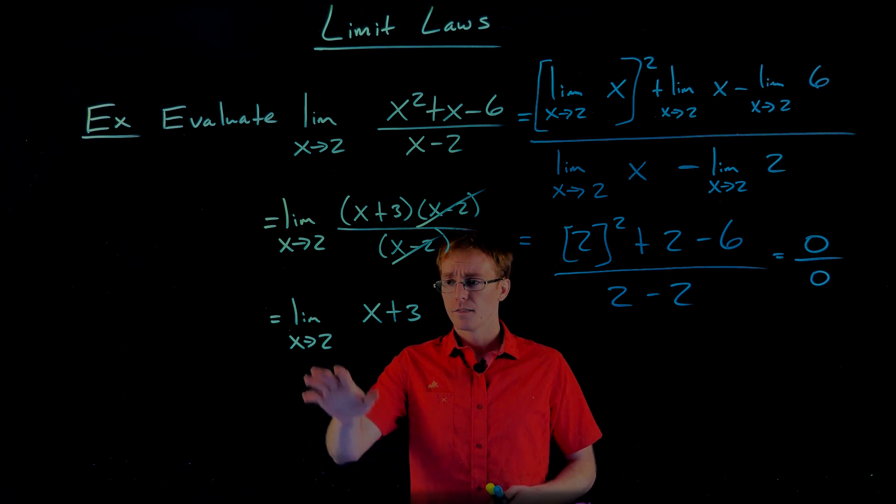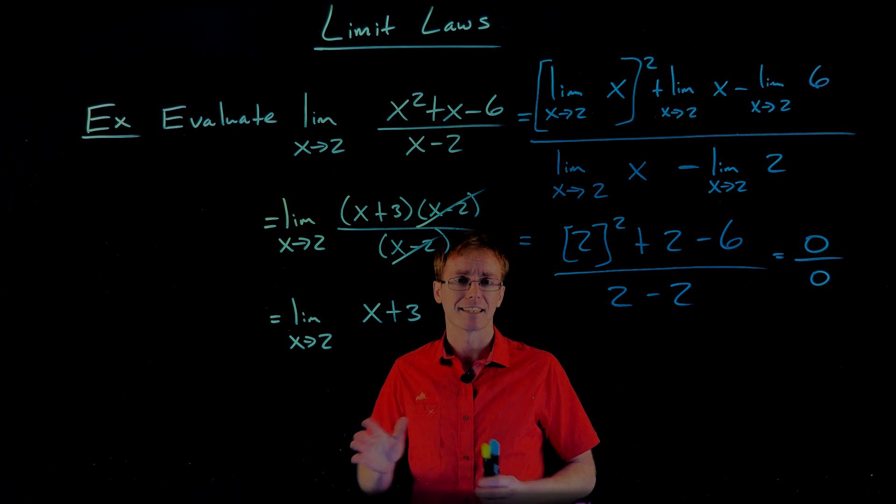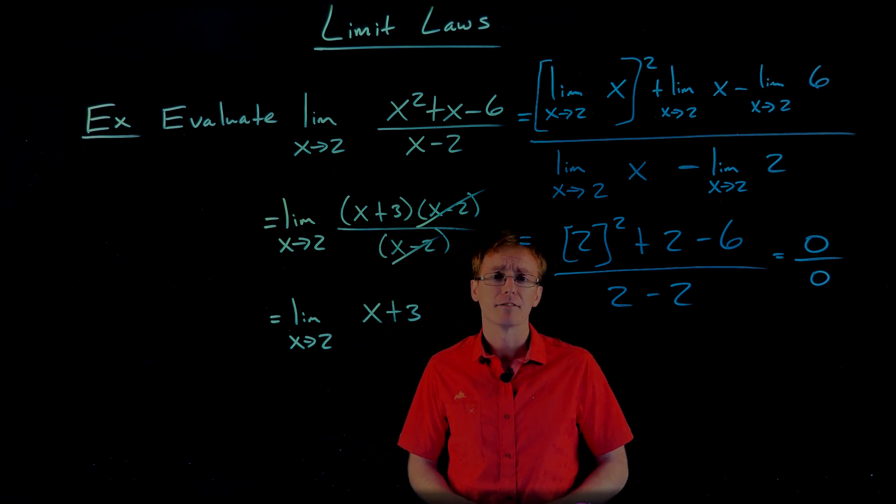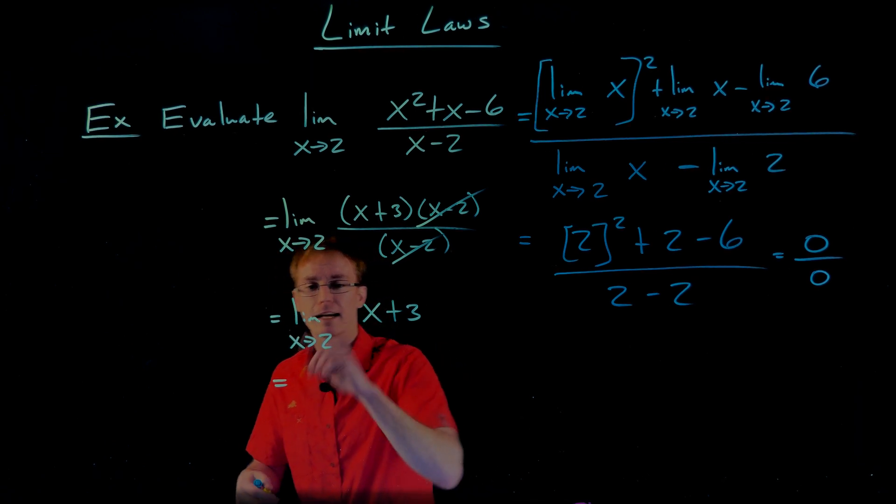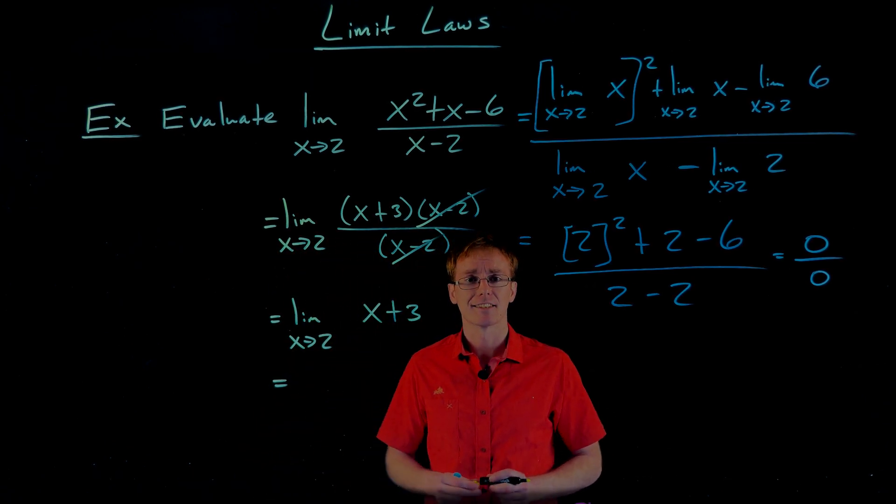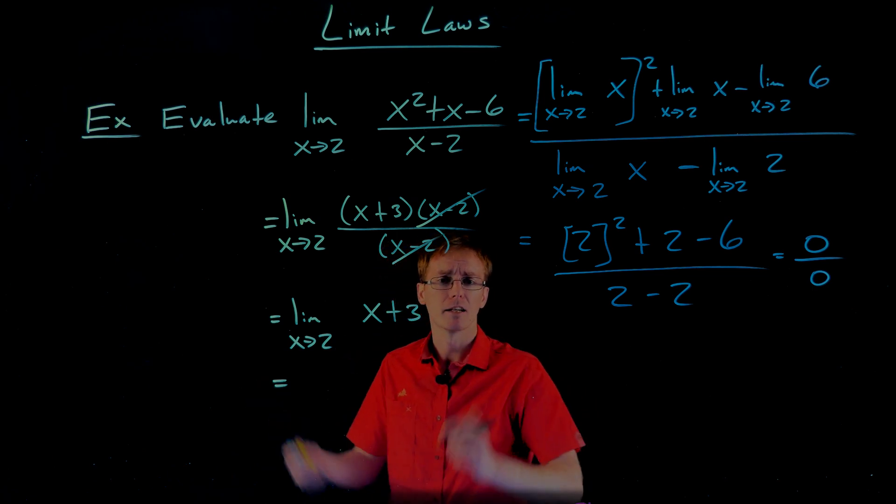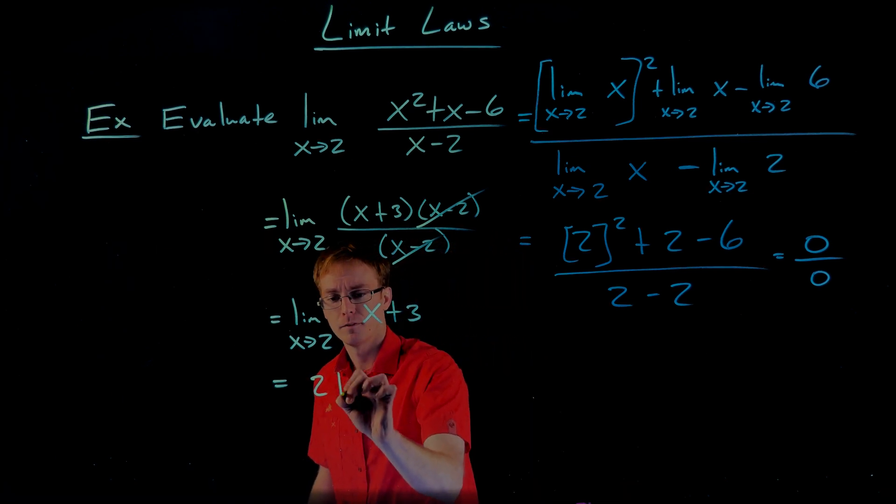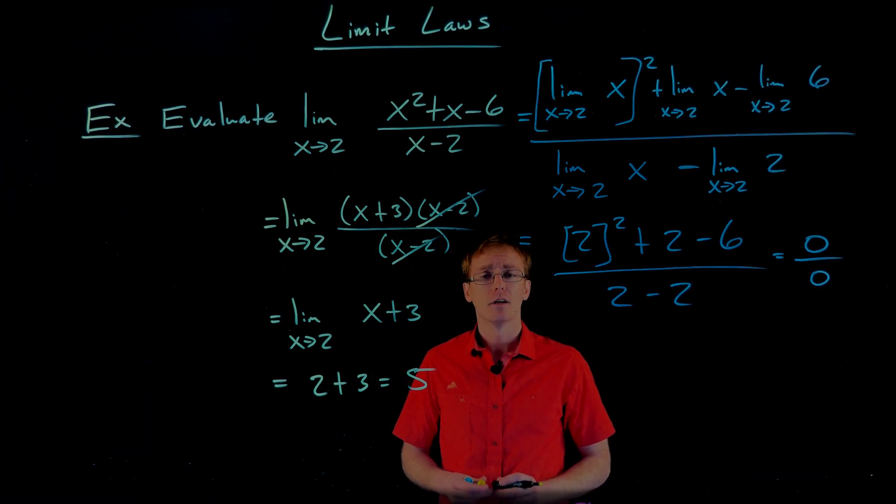It only cares what happens really close by. And this is where that becomes really important because these functions aren't the same function at x equals 2, but they're the same function everywhere else. But like we said, the limit doesn't care what happens at x equals 2. So the fact that these are different at x equals 2 doesn't matter to the limit. The limit only cares about what happens really close by. And really close by, these things are identical. You can't even tell the difference between the two. So because of that, we can look at the simpler function and its limit instead. To find the limit as x approaches 2 of x plus 3, we could break it up and use the sum and difference rule, but we can kind of see where it's going. We're just going to plug in x equals 2. That gives us 2 plus 3 and our final limit value of 5.